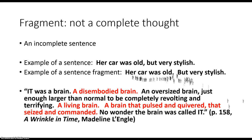I want to talk again about the idea of a fragmented mind — a fragment might reveal a fragmented mind. Here we have a passage from A Wrinkle in Time and I've turned the fragments red: 'So it was a brain, a disembodied brain, an oversized brain just enough larger than normal to be completely revolting and terrifying, a living brain, a brain that pulsed and quivered, that seized and commanded. No wonder the brain was called it.' The person speaking here is very disturbed by this brain — their mind is fragmented, coming in pieces. They have these bursts of energy and emotion, and their sentences are coming out that same way.